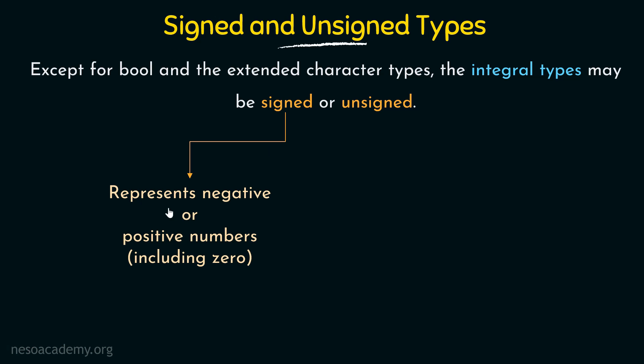What do we mean by signed or unsigned? Signed means they represent negative or positive numbers including zero. From the name itself you can understand: it means the value can carry a sign. Signs are usually used for representing negative numbers. If you don't give a sign, it usually means a positive number. But if you want to explicitly mention a number is negative, you give a negative sign in front of it. So signed types represent negative or positive numbers including zero.